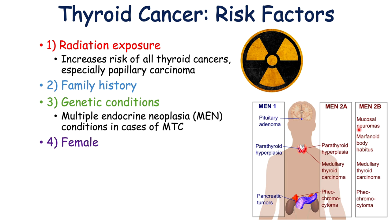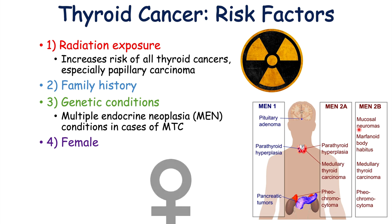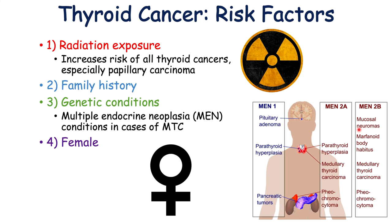Being female is also a risk factor for having thyroid cancer — females outnumber males three to one with thyroid cancers. Patient age is also another potential risk factor. Incidence increases in the third to fourth decade of life, while some types like anaplastic carcinoma occur at higher levels as a patient gets older, into their 60s to 70s.